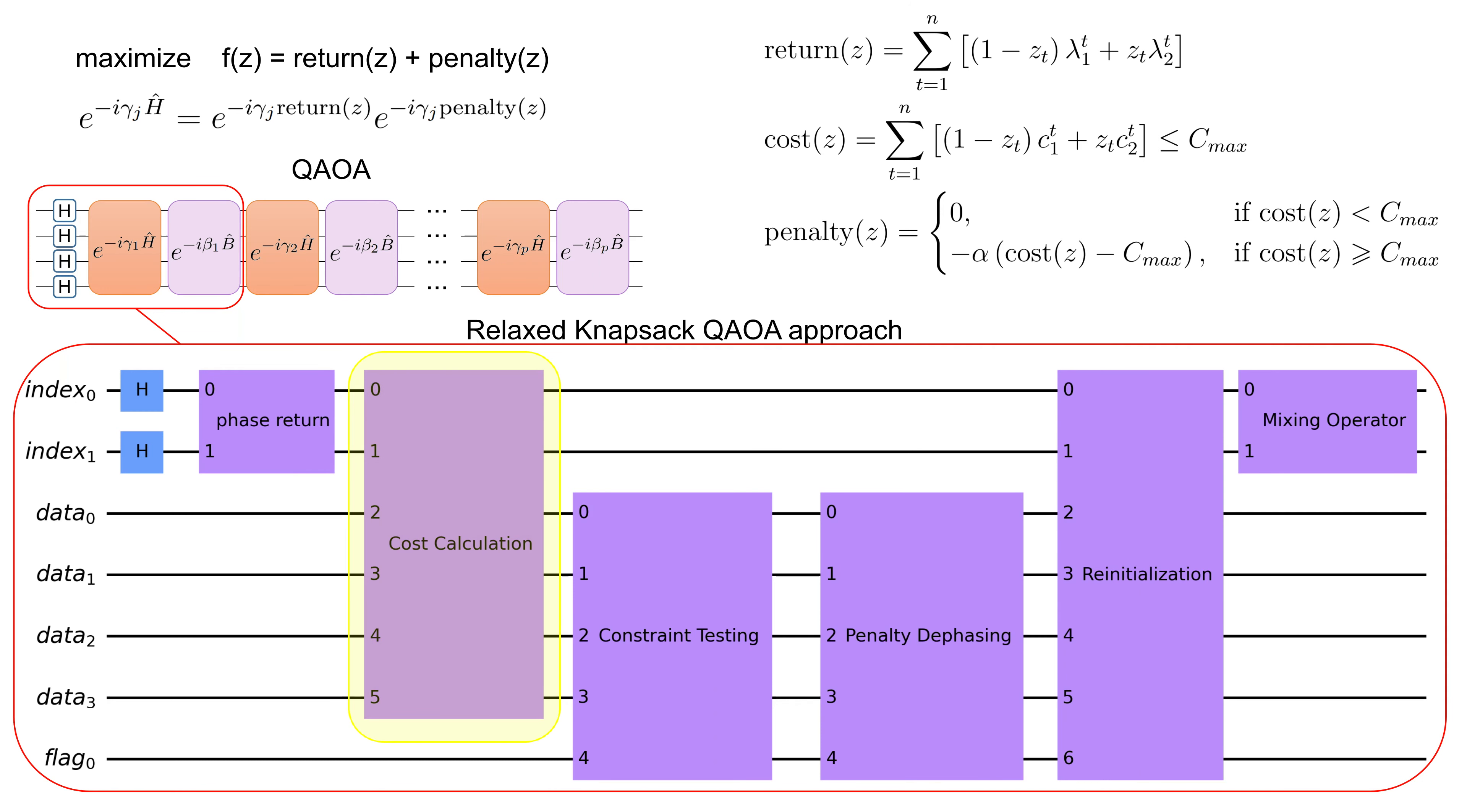The subsequent four operators are required to encode the penalty. First, we calculate the total cost for every combination of Z and store it in the data qubits in a form of QRAM. It is called cost calculation. If you want to know more about QRAM, you are welcome to watch my video about quantum random access memory.